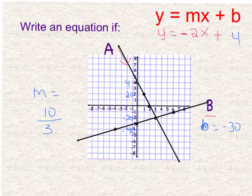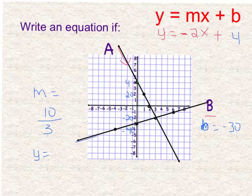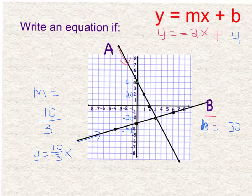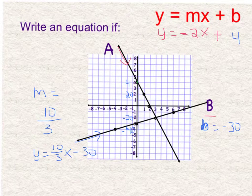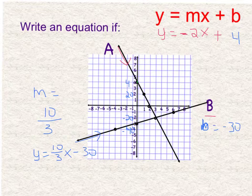So now I can write my equation for B: y equals, it's positive because it goes uphill, 10 thirds x minus 30. So don't forget to look to see how your axes are numbered when you're figuring out the slope from a graph.